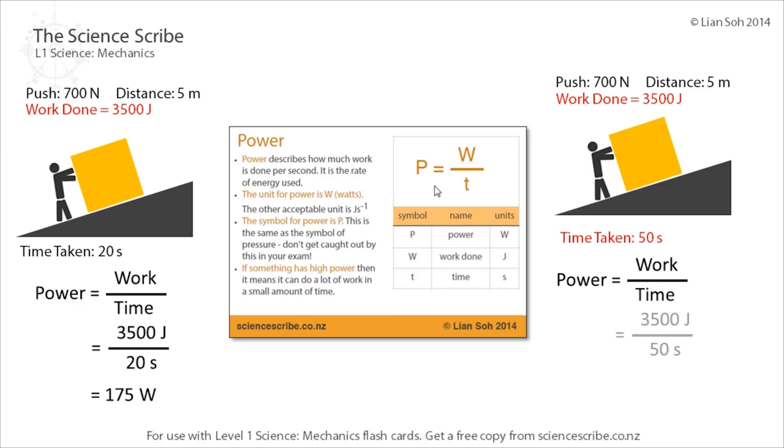So if we put the numbers back in the formula, as you expect, the power will be much less because the person on the right is still pushing the box but they're taking a lot longer, so they're doing less work in a longer amount of time. So they've got a smaller power compared to the person on the left who was doing more work in a smaller amount of time.